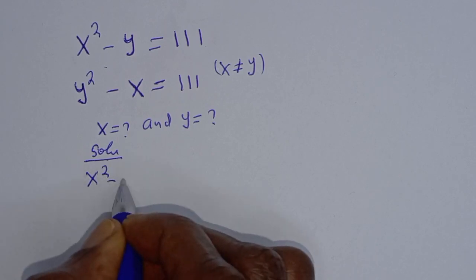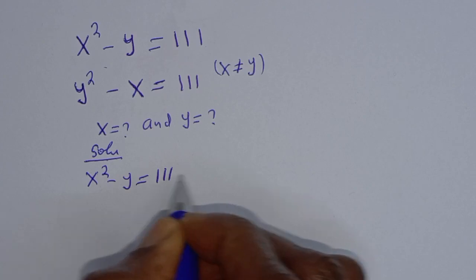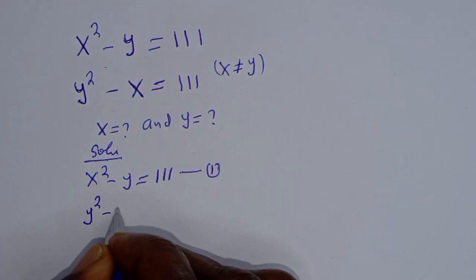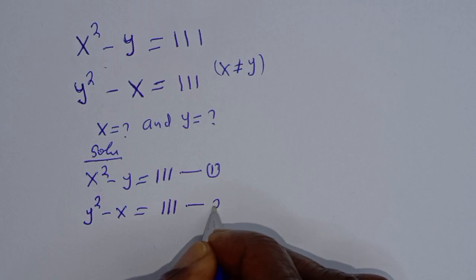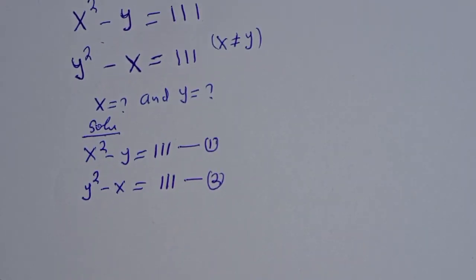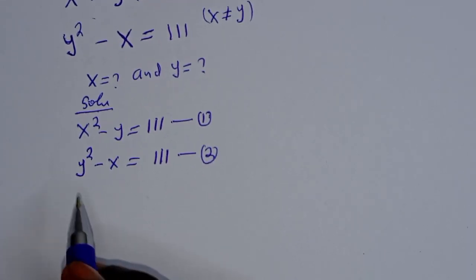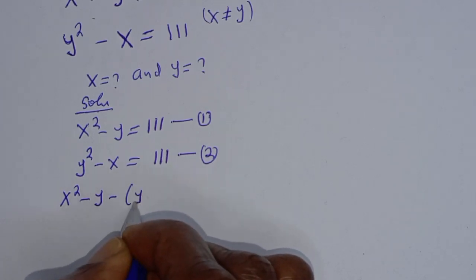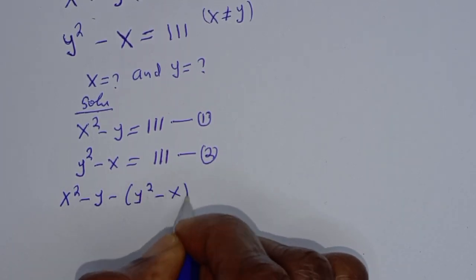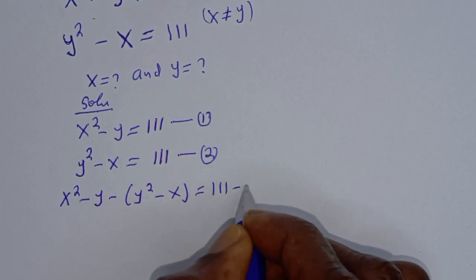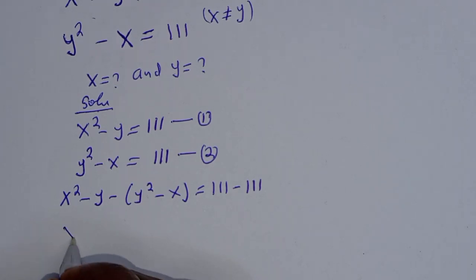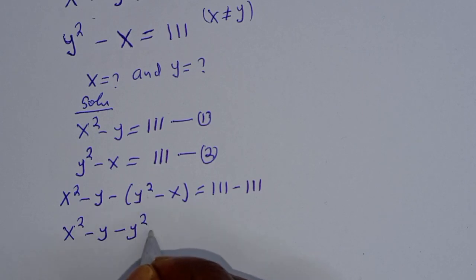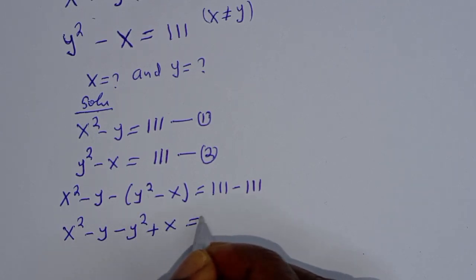x squared minus y is equal to 111 — let's call this equation 1. y squared minus x is equal to 111 — let's call this equation 2. Then we can subtract equation 1 from equation 2. That is, x squared minus y minus (y squared minus x) is equal to 111 minus 111.